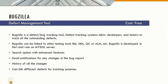The second tool is Bugzilla, which is a defect or bug tracking tool. Defect tracking systems allow developers and testers to track all outstanding defects. It is used for defect as well as test case management. Bugzilla is an open source tool with no cost included. Many companies use it for managing the software development process.